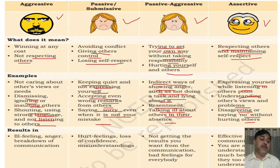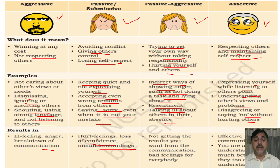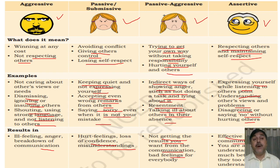As a result, in aggressiveness we find anger and breakdown of communications. In passive/submissive we find hurt feelings and loss of confidence, as well as misinstruction and misguiding, and not getting the perfect result. In passive-aggressive there are bad feelings for everyone. In assertive communication it is very effective — people can understand what the person wants to say and there is total communication among them.